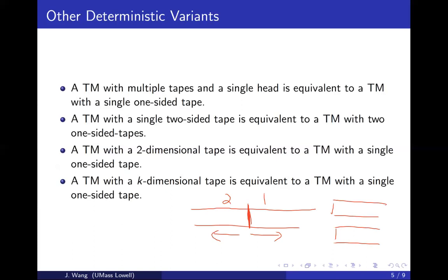When simulating two-sided tape with two one-sided tapes, if the head crosses the boundary going right, the result is handled by the second tape. If it crosses going left beyond the boundary, that is also handled by the second tape. Theoretically it can be done, just taking more time, and in terms of computability both accept the same language.